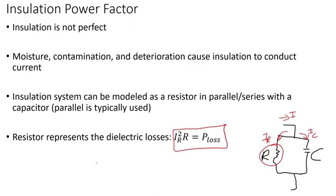We know the power factor equation: it's watts divided by voltage times amps — whatever voltage you apply, whatever current circulates. For insulation, we want this to be zero, but we know it won't be exactly zero, so it'll be some value other than zero. We want it to be as small as possible, because then we know there are no problems with the insulation.